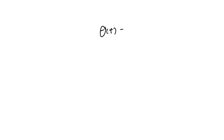Here we are given the function theta of t, which can be written as A times sine of omega t plus phi, where A, omega, and phi are all constants.